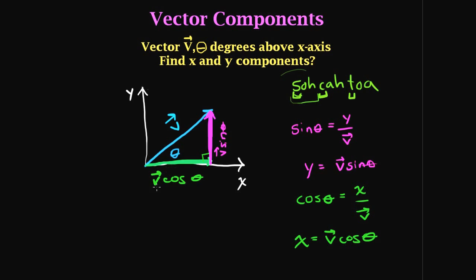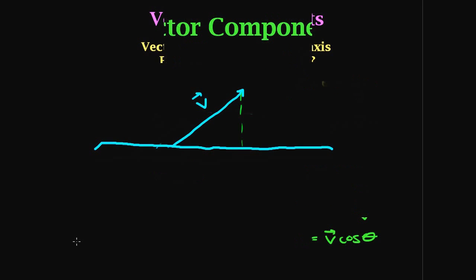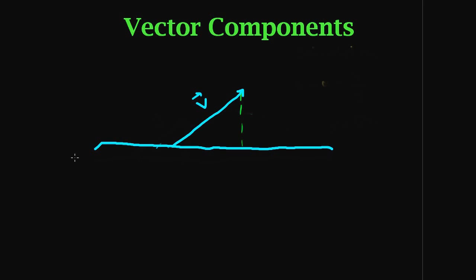So when someone gives you a vector at some degrees from something, turn it into a triangle and find the sides. Here's a practical example: this is the ocean and here comes a dolphin with some velocity out of the water. We want to know the x and y components. We draw a triangle by extending a line down — it's a right angle because it's perpendicular to the surface. This is the vector, and it must have an x component and a y component.